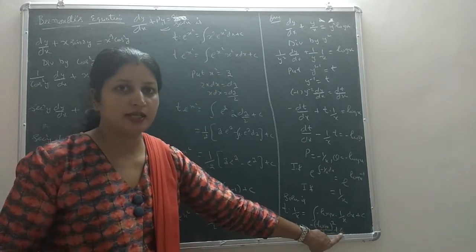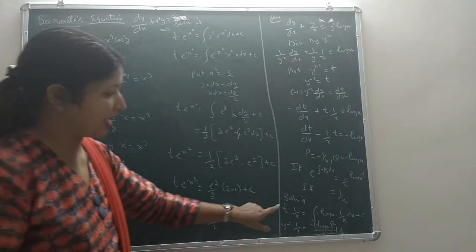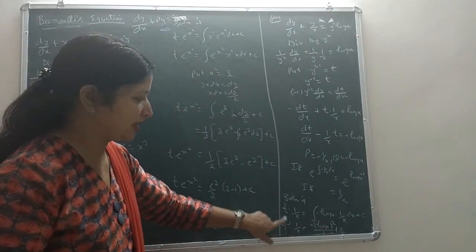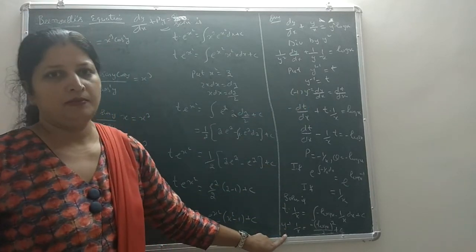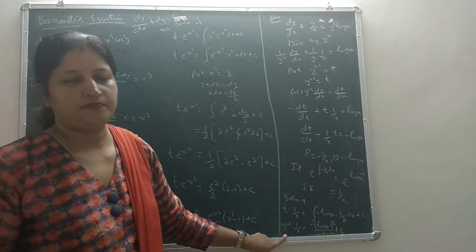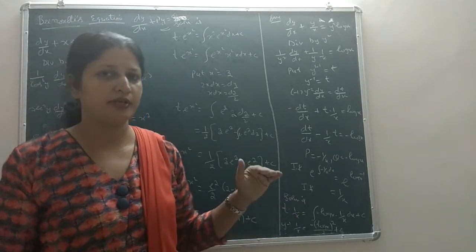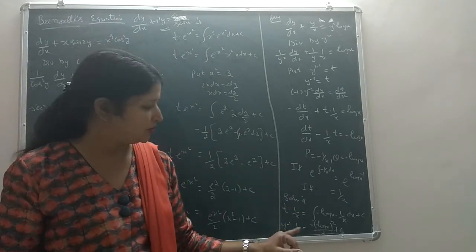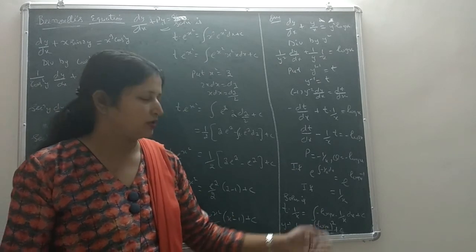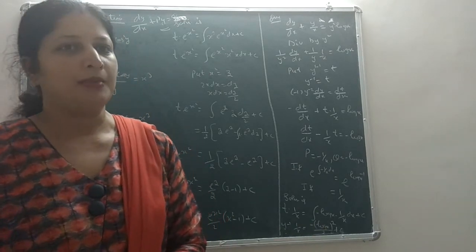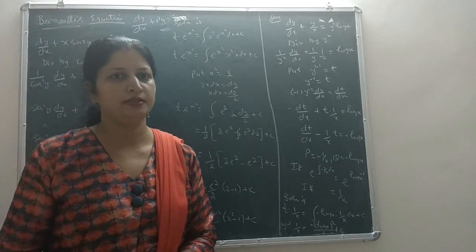The negative sign carries through as it is, giving minus (log x)²/2 plus C. Finally, substituting back t = 1/y, the solution becomes 1/(x·y) equals minus (log x)²/2 plus C. This is our final required solution.